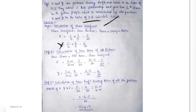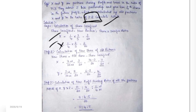Step 1: Calculate the share sacrificed by each old partner. Formula: share sacrificed = new partner's share × sacrifice ratio. X's share sacrificed = 1/4 × 3/5 = 3/20. Y's share sacrificed = 1/4 × 2/5 = 2/20. These are the shares sacrificed by X and Y.